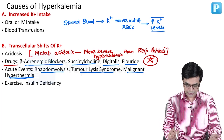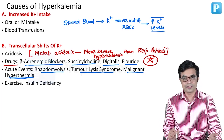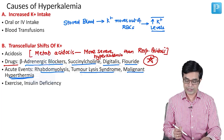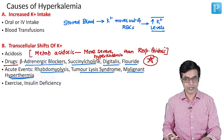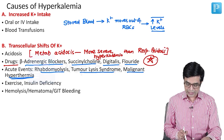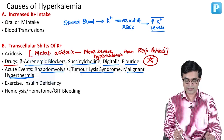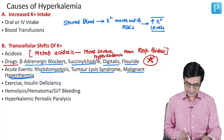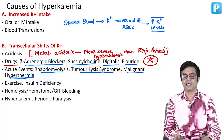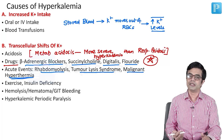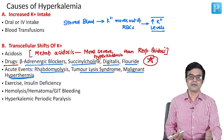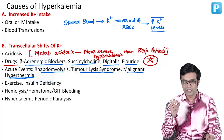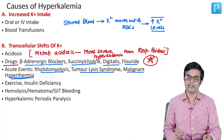In people undergoing vigorous exercise, as well as in insulin deficiency, transcellular shifts of potassium can occur. Hemolysis, hematoma, and GI bleeding can also cause transcellular shift of potassium to the outside. Finally, there is hyperkalemic periodic paralysis — a channelopathy in which transcellular shifts produce episodic paralysis and episodic hyperkalemia in the patient.